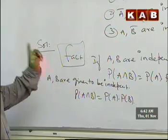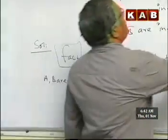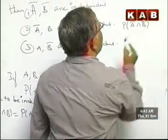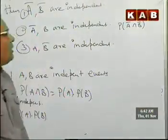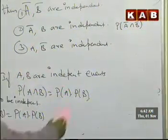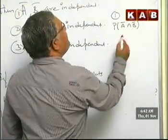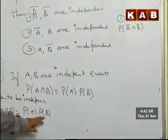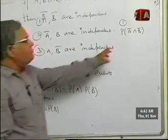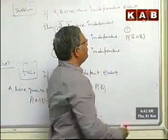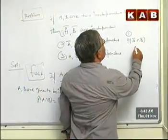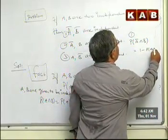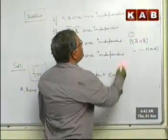For the first part, we need probability of A̅ intersection B̅. If I arrive at probability of A̅ into probability of B̅, then they become independent events. Now recollect that probability of A̅ intersection B̅ is equal to 1 minus probability of A union B. This is a very important result.